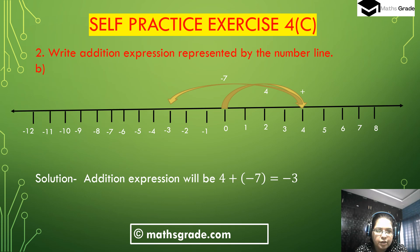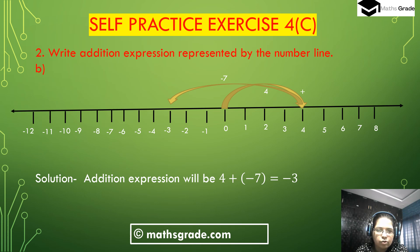Now we solve question number 2 part (b). Starting from 0, the number goes to the right hand side to 4 — distance from 0 to 4 is 4. From 4, the number goes to the left hand side 7 places, giving a minus sign: 4 plus minus 7. Counting 7 places left from 4 lands at minus 3. So the addition expression will be 4 plus minus 7 equals minus 3.